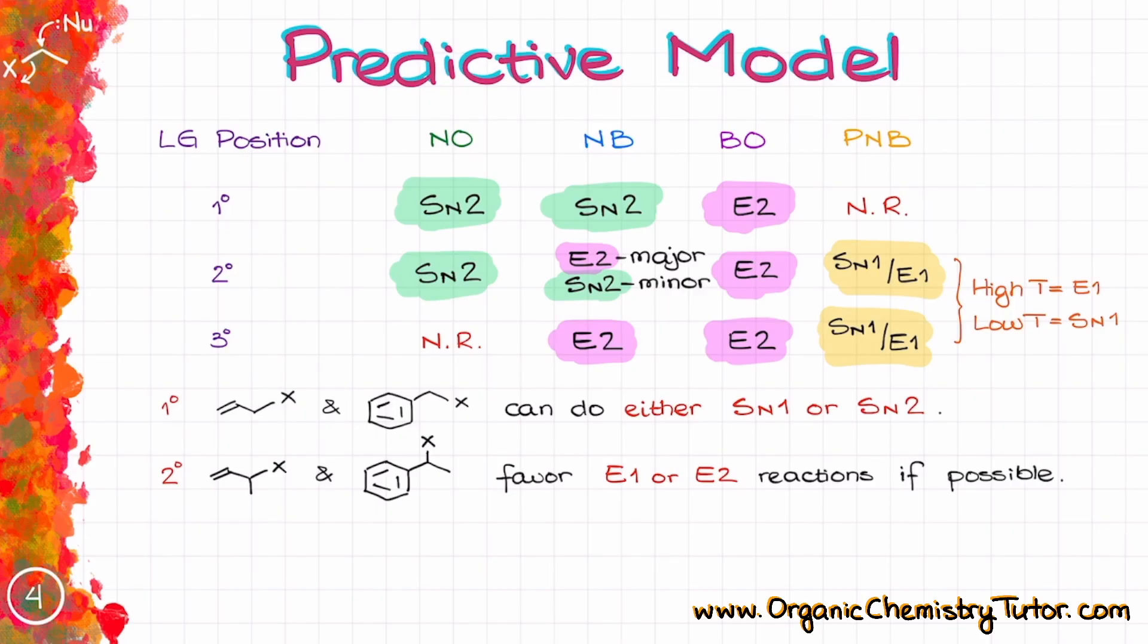However, you would still have to analyze the system and see what's the most logical outcome based on the conditions and the substrate structure itself. For instance, if there is no suitable proton for the E2 reaction, the SN2 will be the likely case. So in a nutshell, everything is fair game for those substrates and that makes them the most complicated ones to analyze.